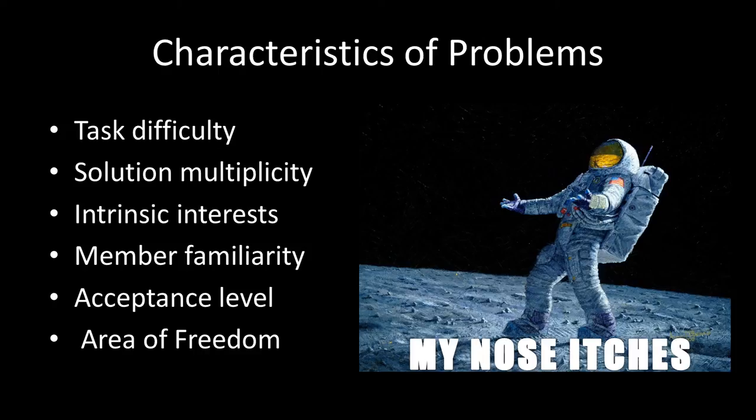Acceptance level is the degree to which the solution must be accepted by the people affected by the problem. Keep in mind that doesn't necessarily mean acceptance within the group — your group members might be all for the solution, but you have to think about the acceptance level of those your solution impacts. For example, if a community center was destroyed in a storm and you were trying to find a new location, acceptable relocation would need to meet community standards, not just group standards. Last is area of freedom, which has to do with the amount of authority or limitations on authority your group has in terms of being able to act and solve problems.